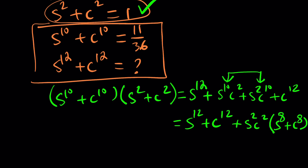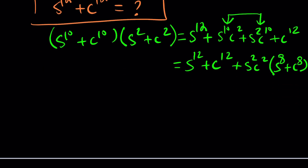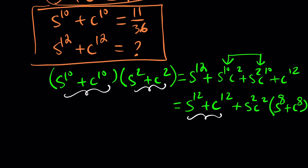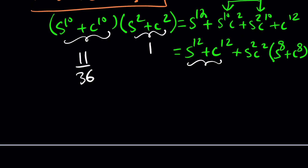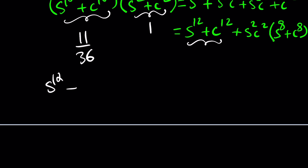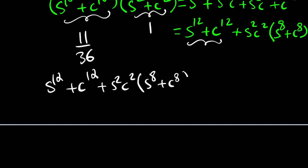Let's focus on this. We're supposed to solve for s¹²+c¹², and we know the sum of 10th powers is 11 over 36, and s²+c²=1. Since s¹⁰+c¹⁰ multiplied by s²+c²=1, their product is just 11 over 36. So: s to the twelfth plus c to the twelfth, plus s squared c squared times the quantity s to the eighth plus c to the eighth, equals 11 over 36.